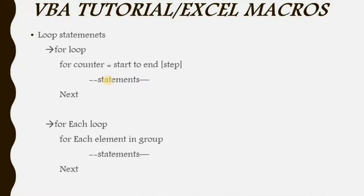These are the loop statements I am going to discuss in this video. The first one is the For loop, the next one is For Each, then Do While, and finally Do Until. For now, let's know about the syntaxes of all the loops at a time, so you will get some idea about all the loop statements in VBA at a glance.